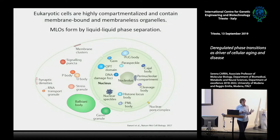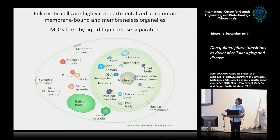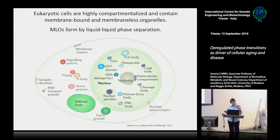We know that eukaryotic cells are highly compartmentalised, that they contain both membrane-bound and membrane-less compartments. In this cartoon we only see membrane-less compartments. We have, for example, stress granules that are induced upon stress in the cytoplasm, RNA transport granules in the cytoplasm, and then many of these membrane-less compartments are present in the nucleus like the nucleolus itself and several bodies like PML bodies, nuclear speckles, and Cajal bodies.